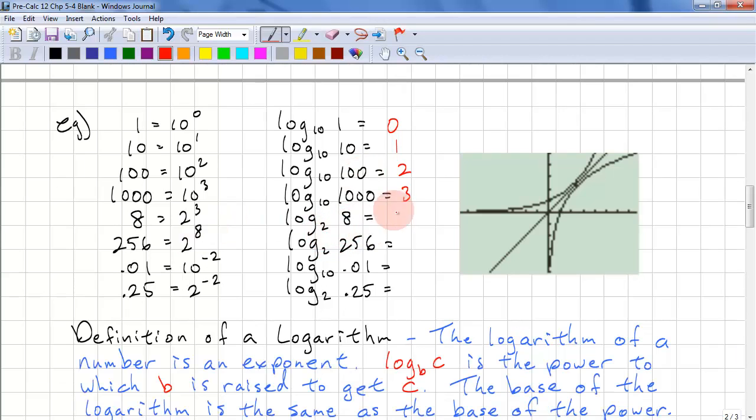Log 2 of 8 is the exponent here, which is 3. Log 2 of 256 is the exponent here, which is 8. If we have negative exponents, then we're looking at 1 over 10 to the power of 2, which is 0.01. So log 10 of 0.01 is the exponent, negative 2. And here, log 2 of 0.25 is negative 2.